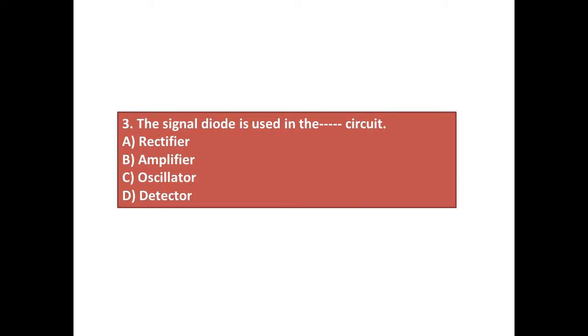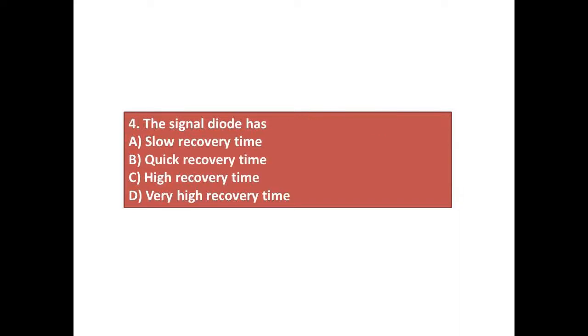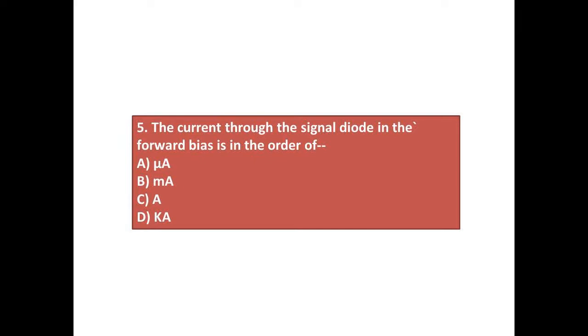Question number four: The signal diode has answers: A) slow recovery time, B) quick recovery time, C) high recovery time, D) very high recovery time. Question number five: The current through the signal diode in the forward bias is in the order of answers: A) micro ampere, B) milli ampere, C) ampere, D) kiloampere.